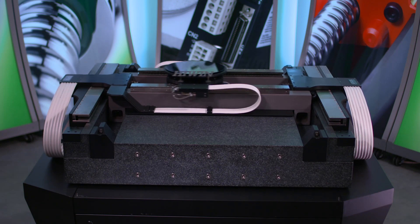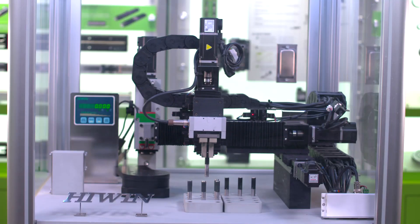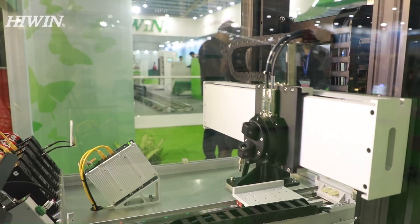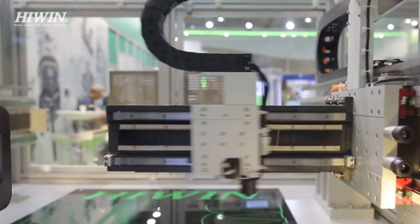Hiwin Corporation is a leader in high-precision linear and rotational motion technologies used in building machines for manufacturing automation and scientific test equipment.